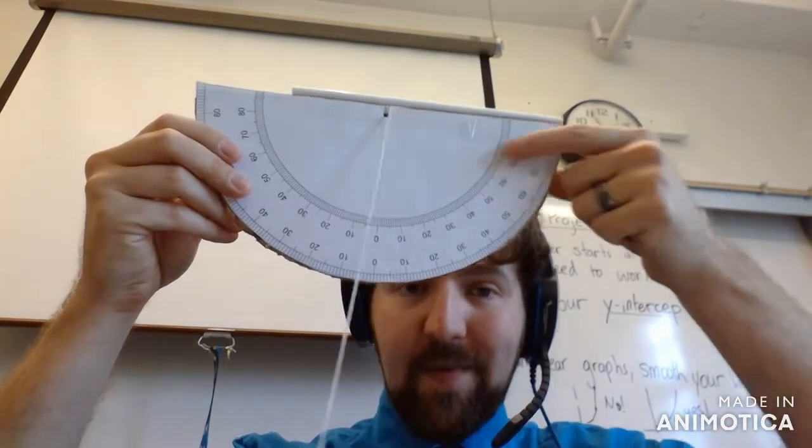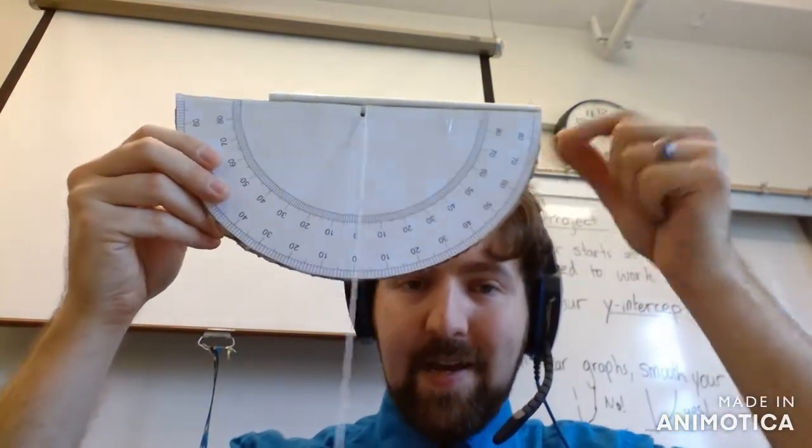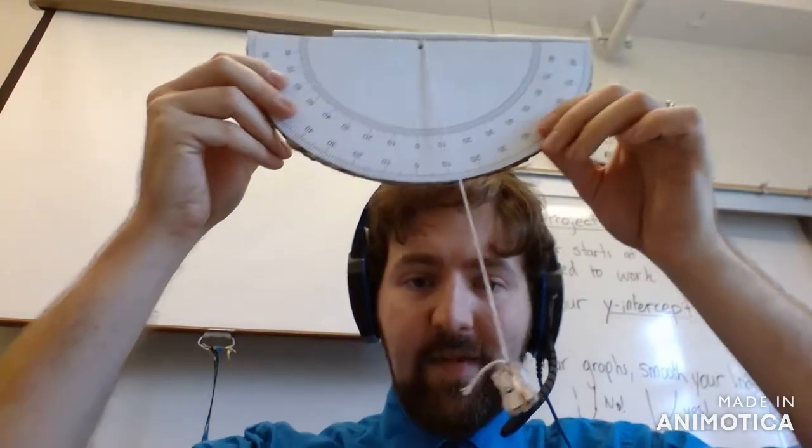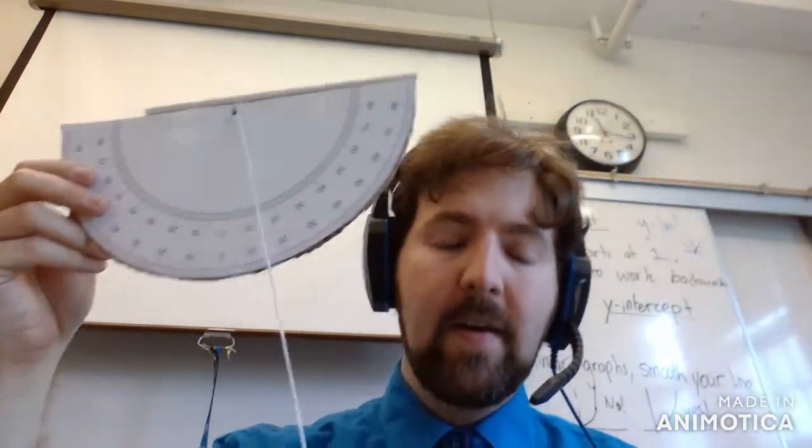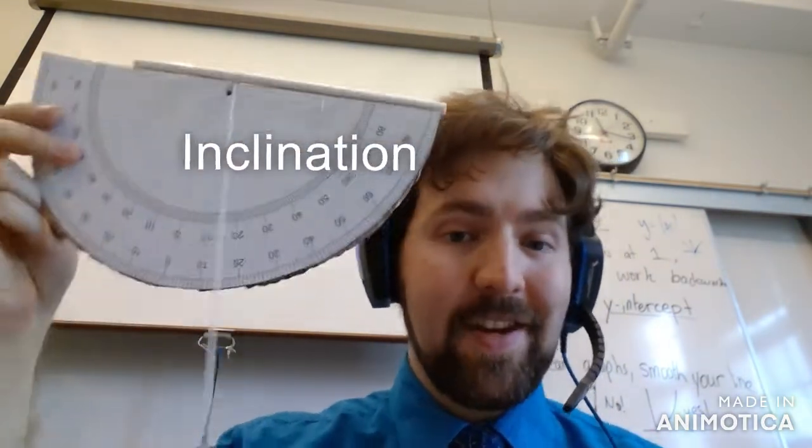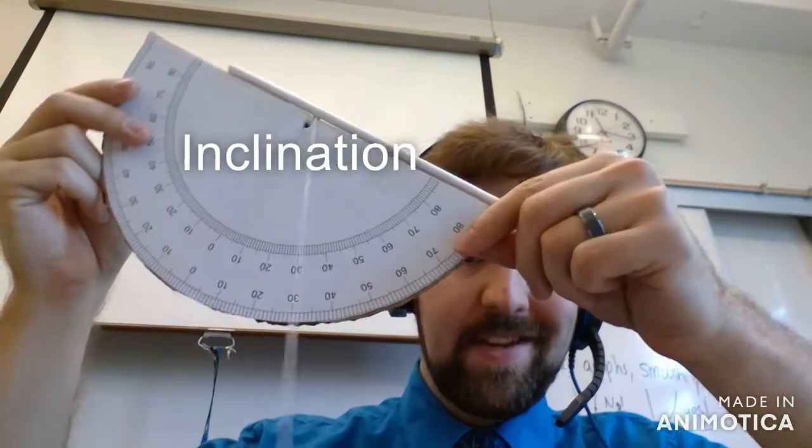Number one, there's a protractor. Two, there's a straw. And I've got some sort of hanging weight. People used this for measuring something called inclination - how much something is tilted one way or another. I'm going to show you how to make one of your own, and in the next video I'll show you what we can do with this.